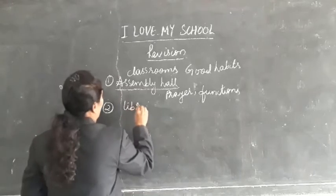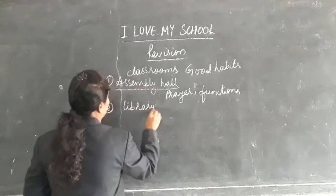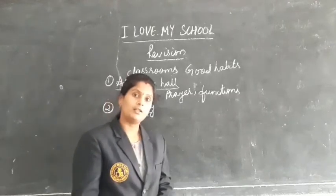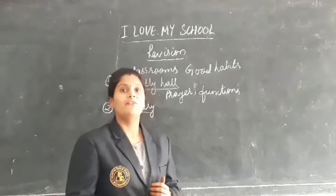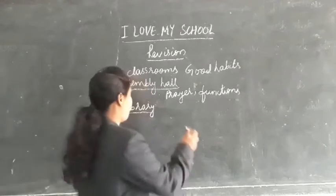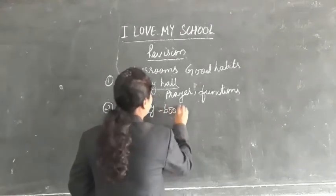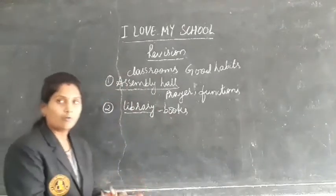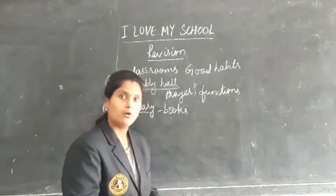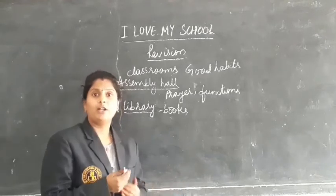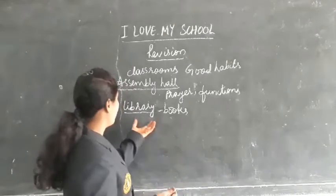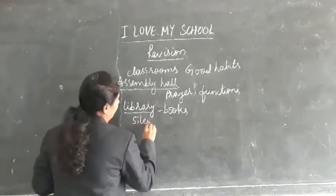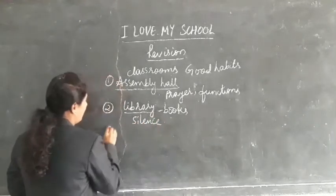Next, coming to the library. The library is a room which contains different kinds of books — story books, subject books, and many other types of books. We should maintain silence in the library.